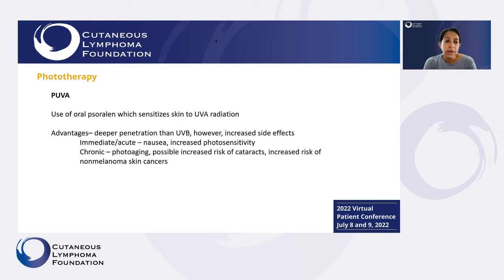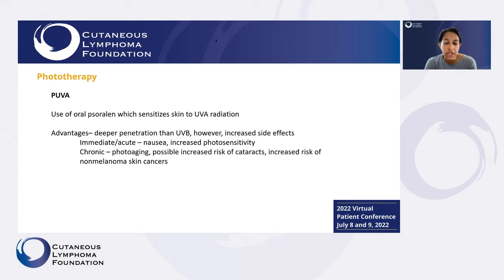The other type of phototherapy is PUVA, which uses UVA radiation given in association with oral soralen. This is thought to penetrate a bit deeper than UVB, but there can be some increased side effects, including nausea, some increased photosensitivity, and in the long-term, some possible increased risk of cataracts, photoaging, and risk of non-melanoma skin cancers.